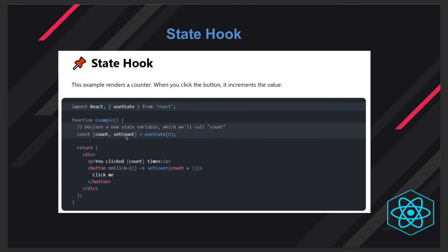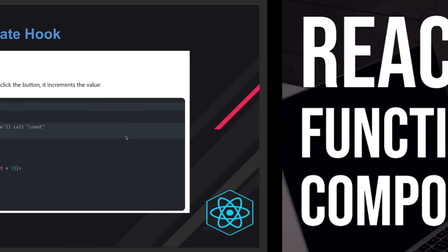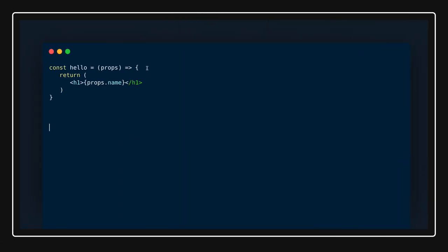This is a long journey — we're going to cover many different hooks across different videos: useState, useEffect, useReducer, useContext, useRef, useCallback, useMemo, different varieties of useEffect, and we'll also write custom hooks like useAxios, useFetch, and useLocalStorage. Custom hooks are nothing but simple vanilla functions. The advantage is that hooks and these new APIs are making our functional components more powerful, so we can focus on our logic without worrying about boilerplate code.